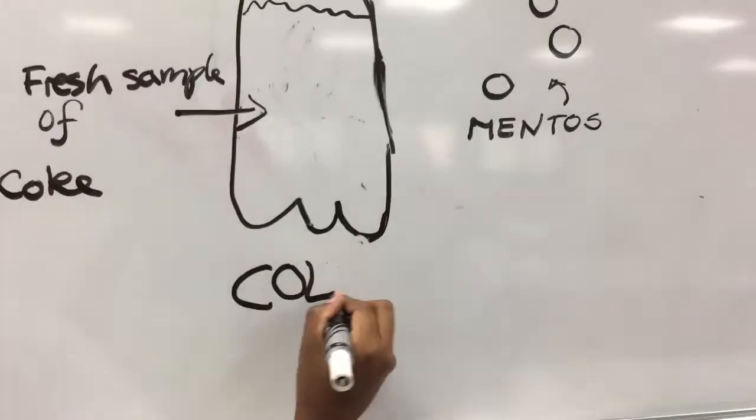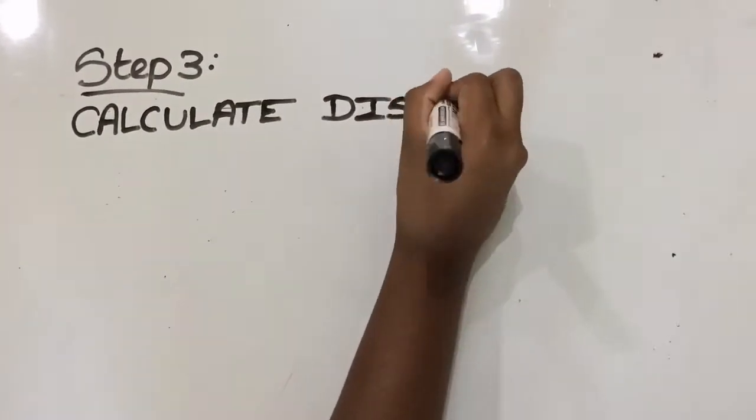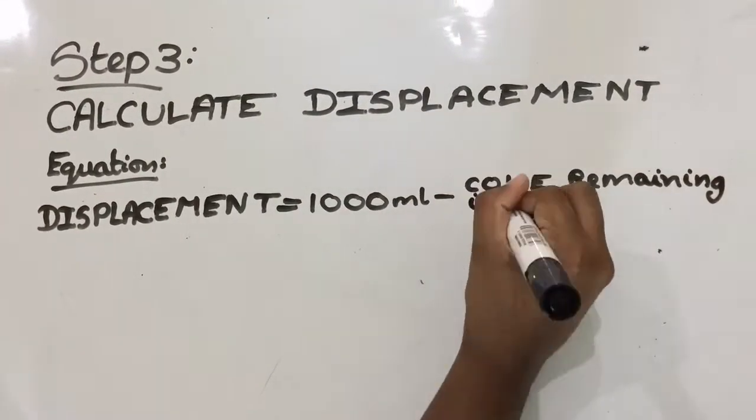collect a fresh sample of coke and mentos. Next step, drop the mentos into the coke. Finally, calculate the displacement using a measuring cylinder and the equation on the board.